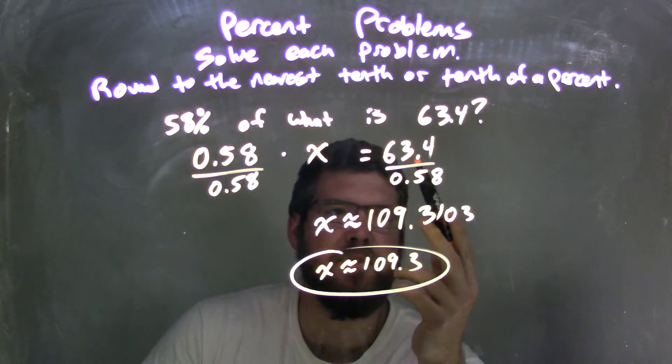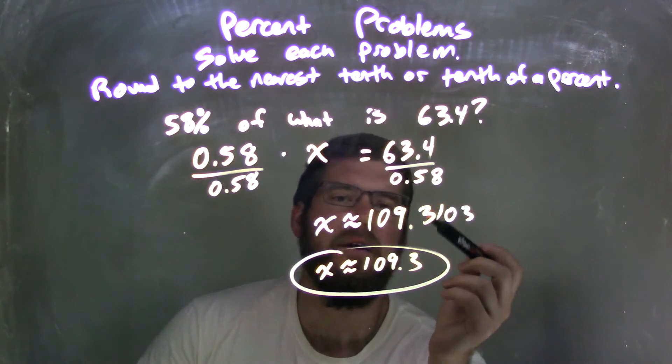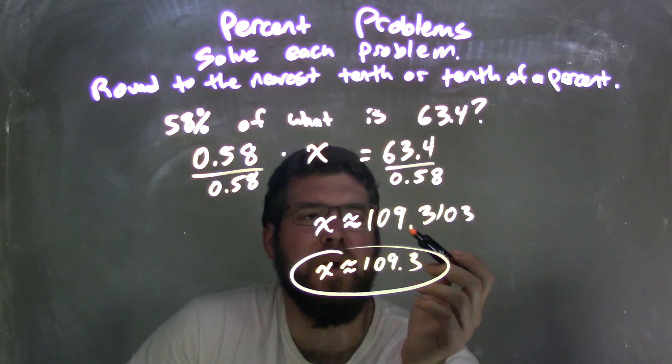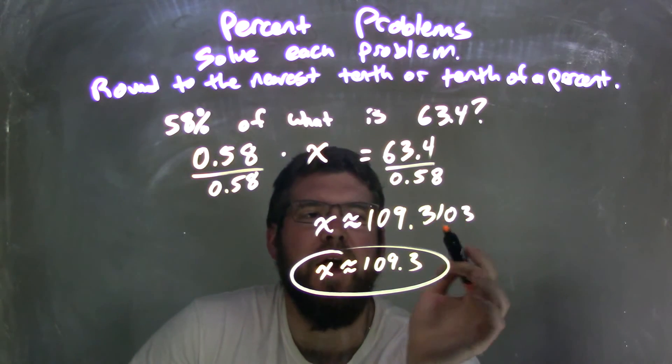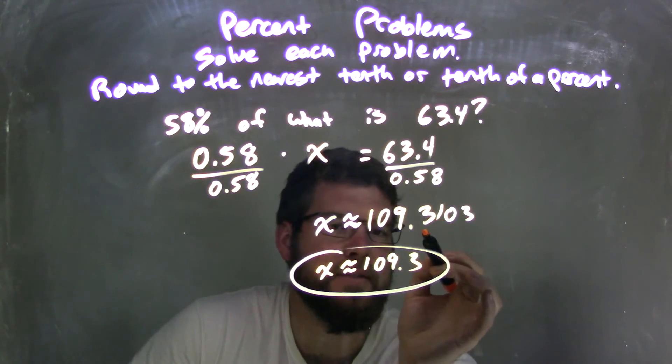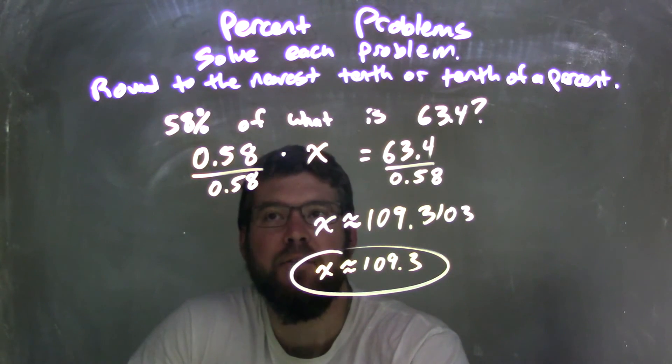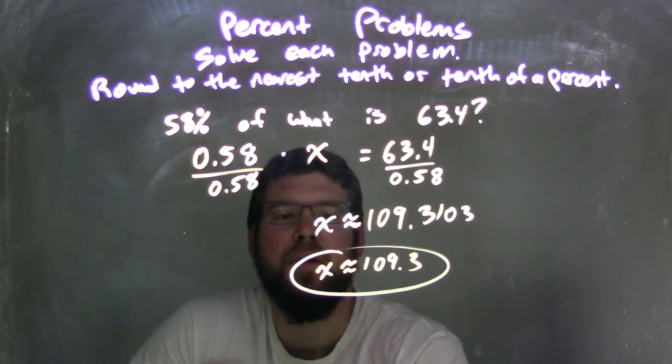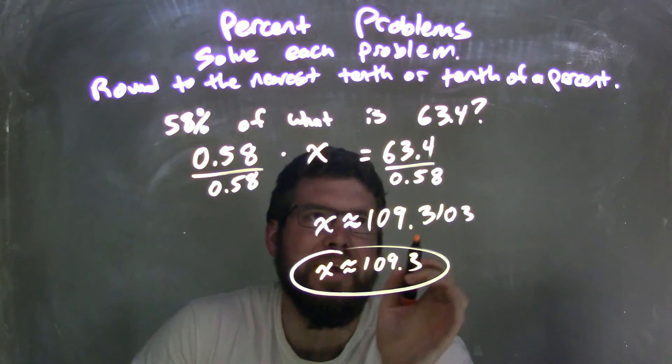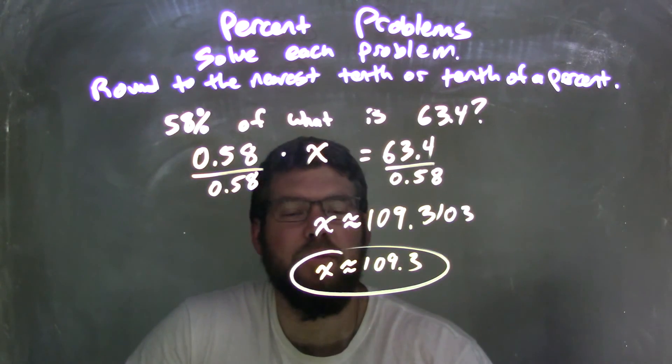Equals, from my calculator, 63.4 divided by 0.58, which is approximately 109.3103. I then rounded that 3, looking at the 1, causing the 3 to stay the same. And so my final answer to answer the question is 58% of 109.3 is 63.4.